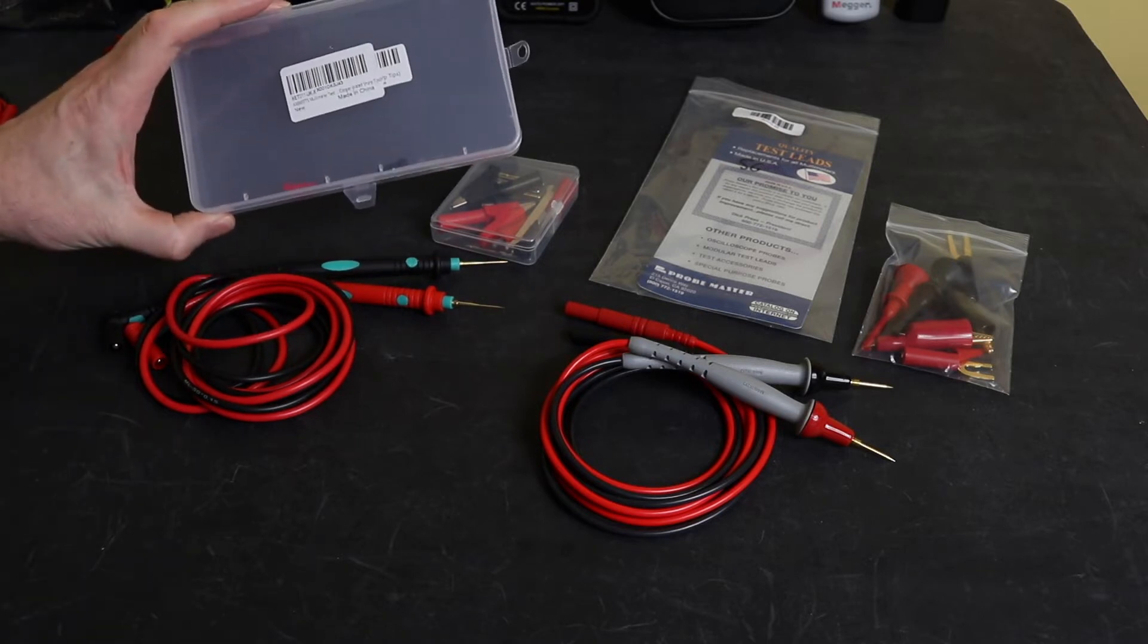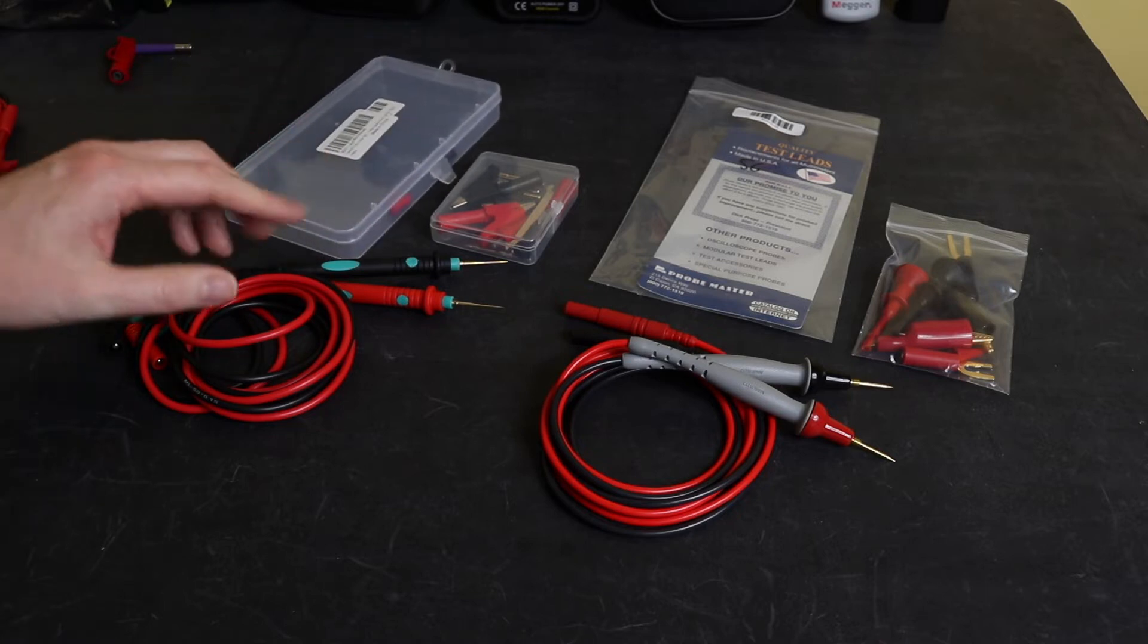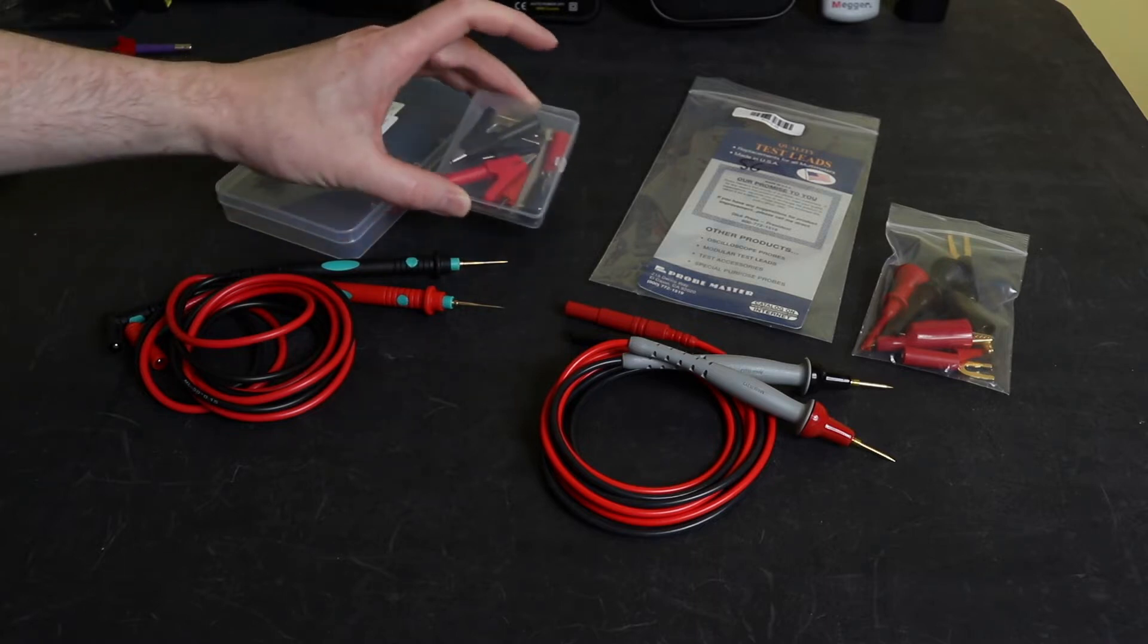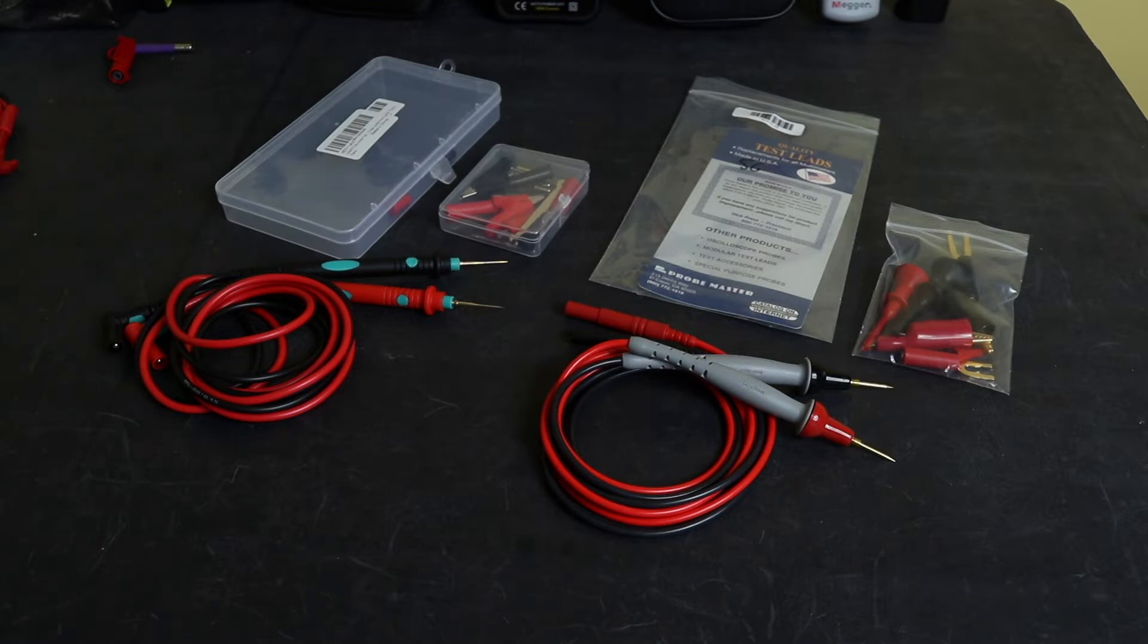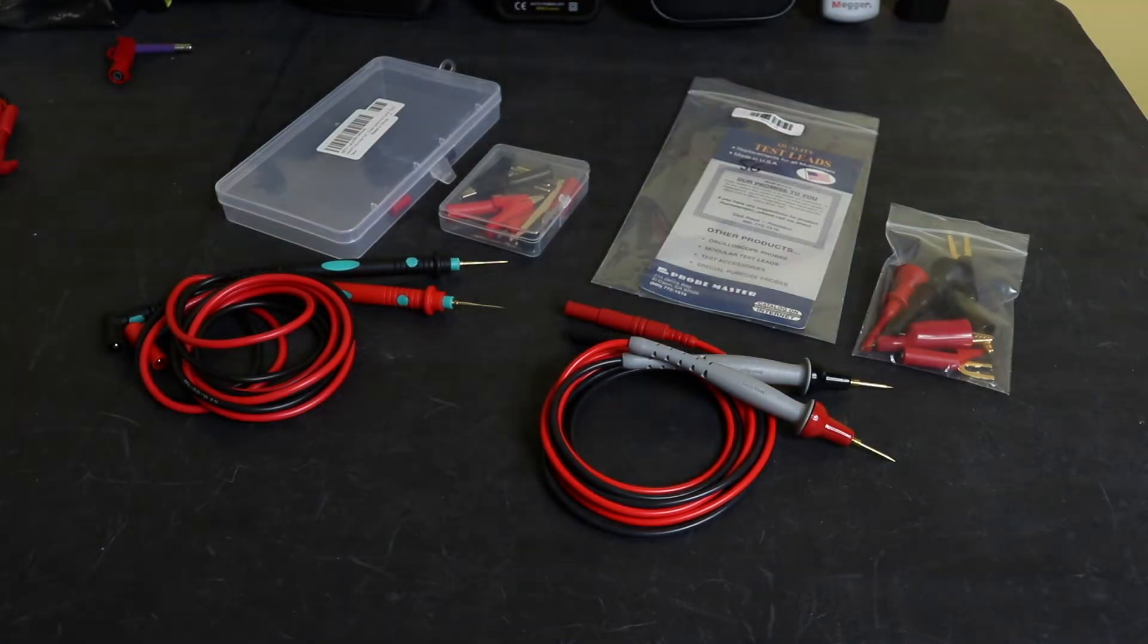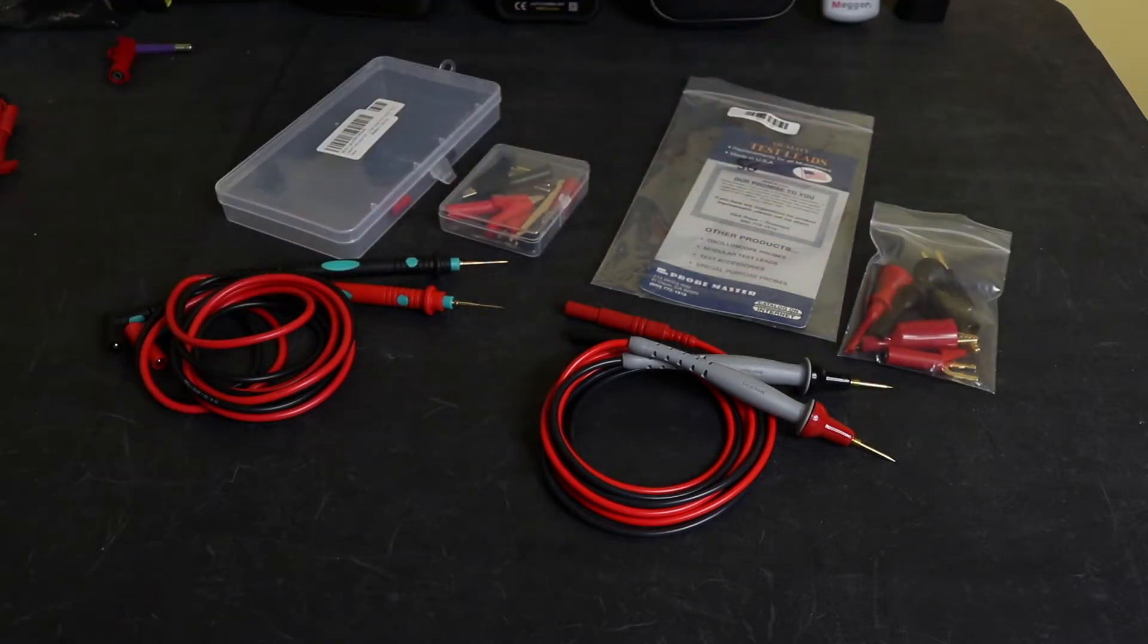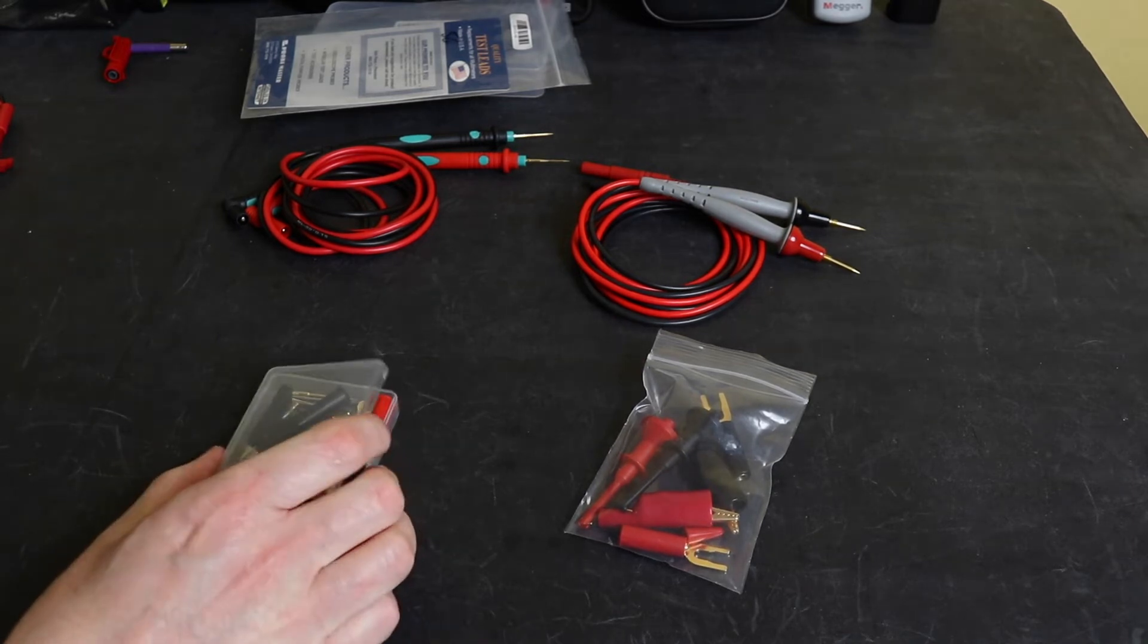The set of leads from Kiwitz are the KET011. They come in a little plastic container along with a set of accessories. In the UK these are available from Amazon for 19 pounds. The Probe Master set is the 8044s. They come in a couple of ziplock bags, one for the leads and the second one for all the accessories. In the UK they're available from Simon's Electronics for around 38 pounds, so double the price of the Kiwitz leads.